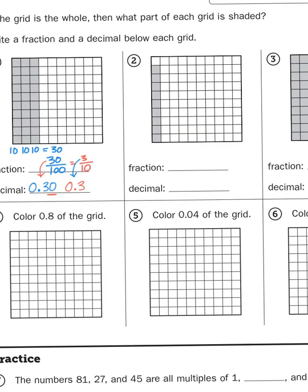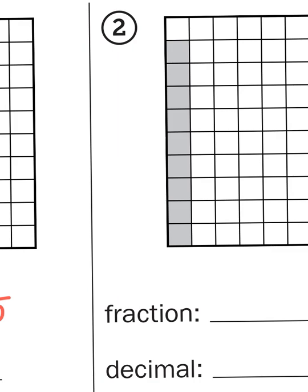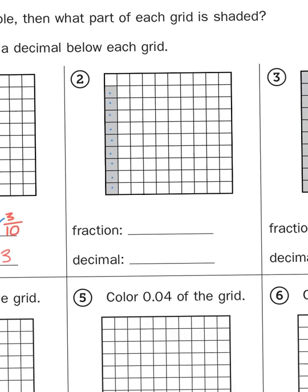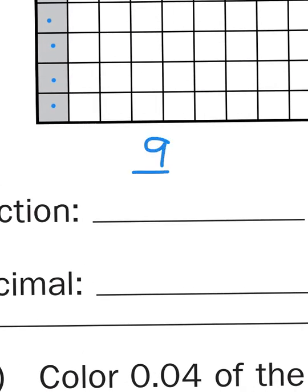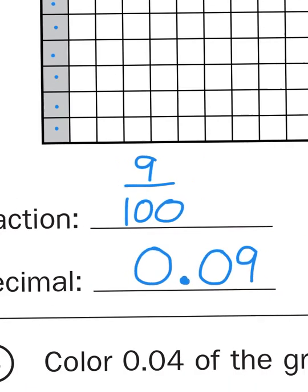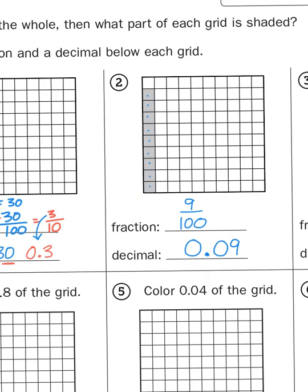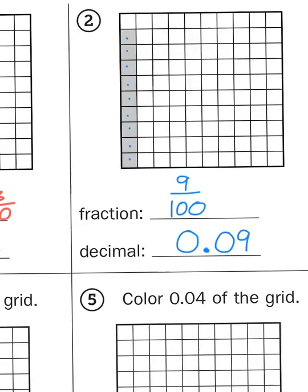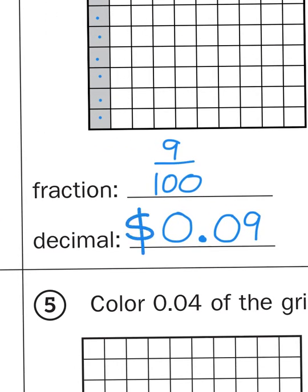For number two, we see that we haven't quite shaded in an entire column of squares. We only have 9 boxes total out of a possible 100 boxes, so our fraction is nine hundredths. To represent that as a decimal, I start with a 0 because we're dealing with less than one whole, then the decimal point, and then another 0 right behind the decimal point as a place value holder, telling the reader we are dealing with hundredths. If I put a dollar sign in front, you'd recognize we're talking about nine pennies and not nine dimes.